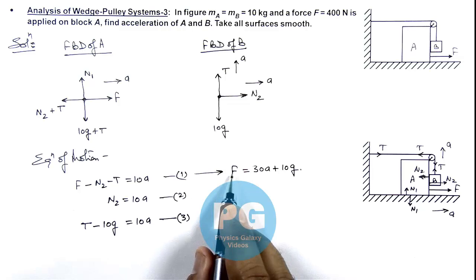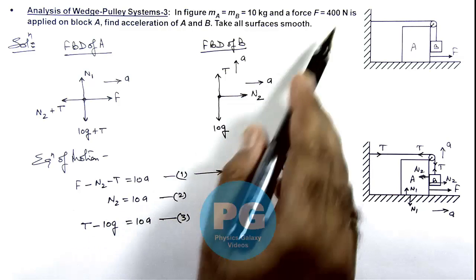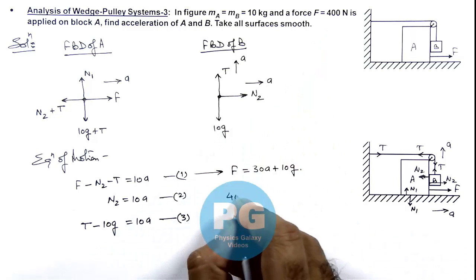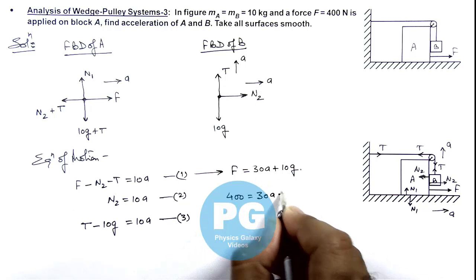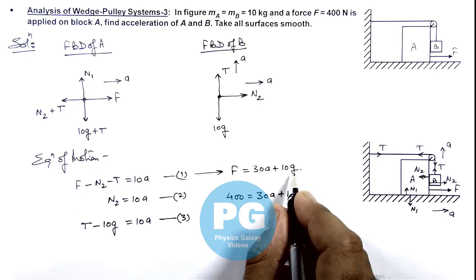And in this situation the value of F we are given at 400 newton so this is 400 is equal to 30a plus 100. I am taking the value of g as 10.